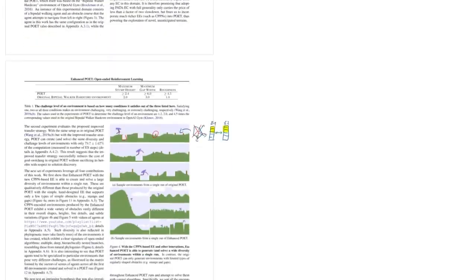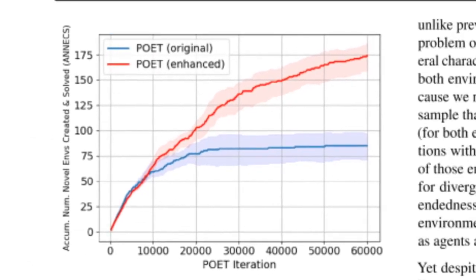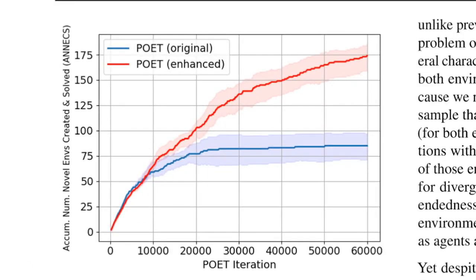You can see the difference to the original poet in this graph. So the original poet eventually runs out of new environments because its generator is just not powerful enough. It can only modify these five variables and eventually the environments aren't substantially novel from the old environments. Whereas the enhanced poet, you can see, even after this run, and I'm sure they have large infrastructure to do these experiments, it just continues to innovate new, more elaborate environments, continuously.